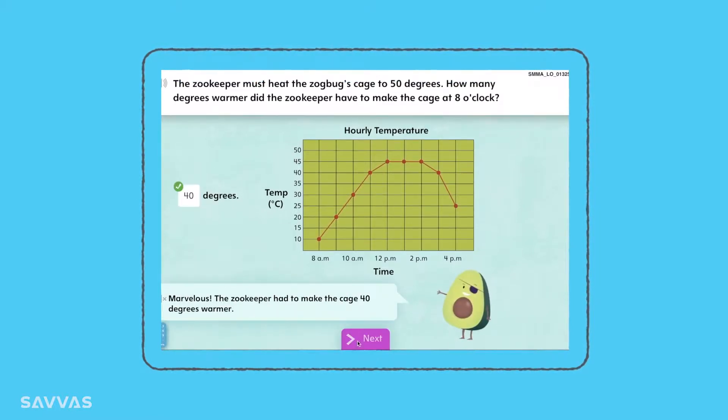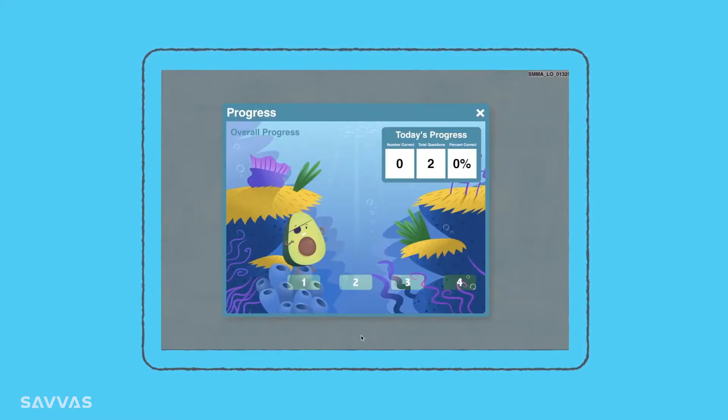Along the way, progress tracking helps students see how they are doing as they work toward earning rewards in the system.